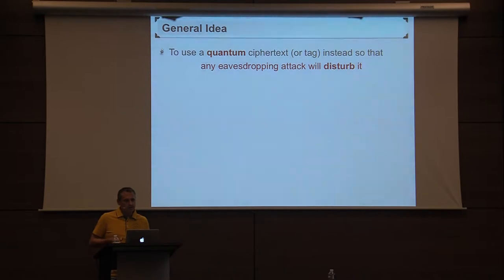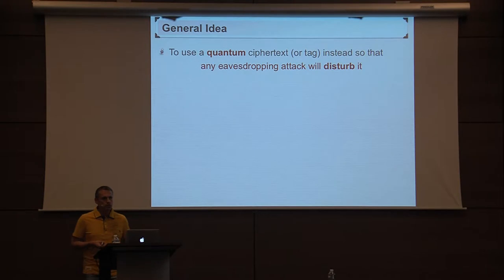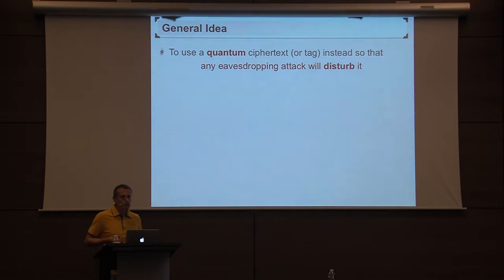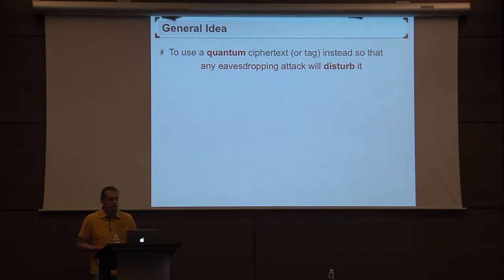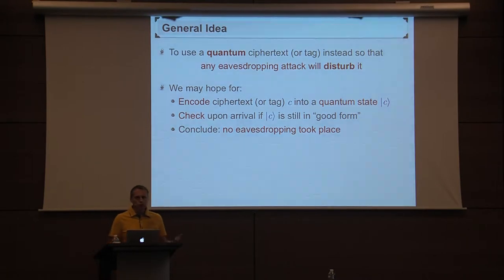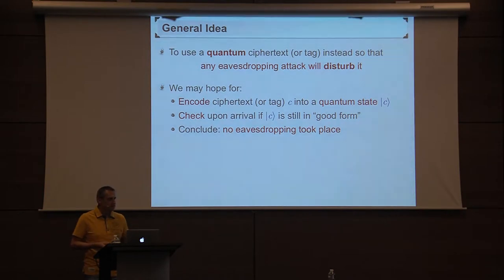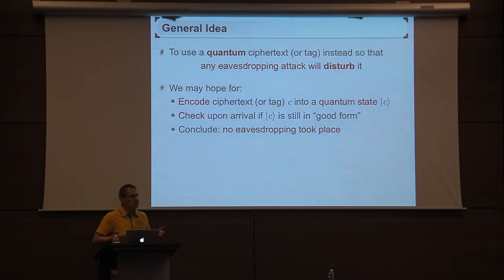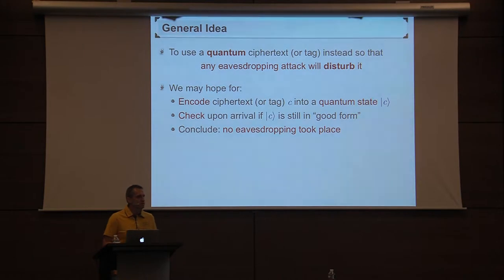That's sort of where the idea of quantum kicks in — the idea of using a scheme with a quantum ciphertext or quantum authentication tag instead, because there we can make use of the fundamental property of quantum mechanics that any eavesdropping will disturb the state. So this is the hope for a scheme that encodes the ciphertext or the tag into a quantum state, and that we can then check upon arrival if the state is still in good form.